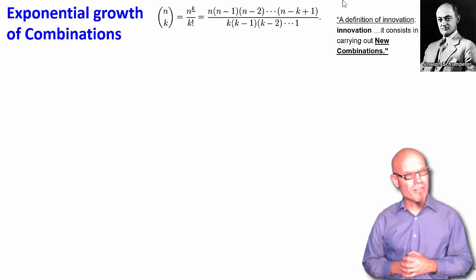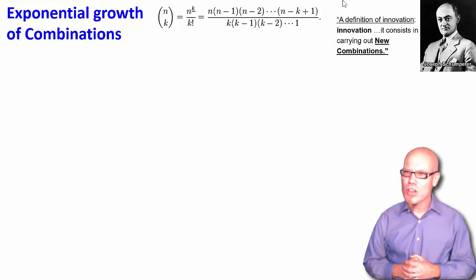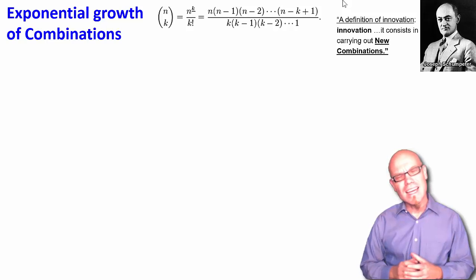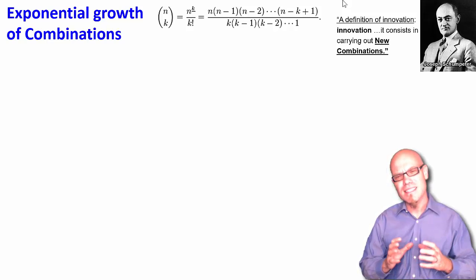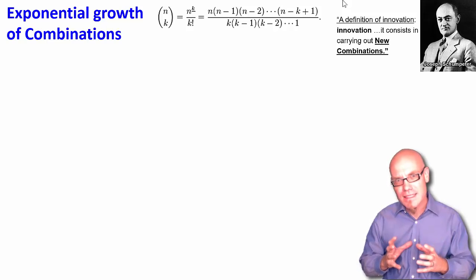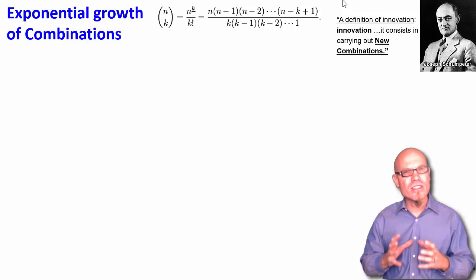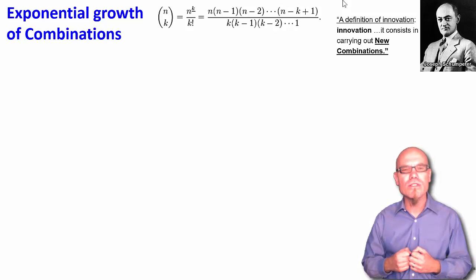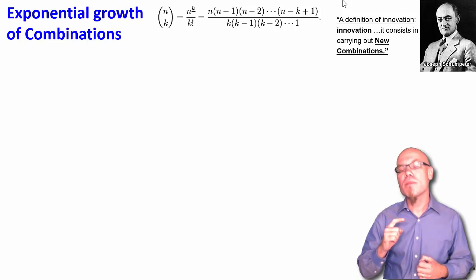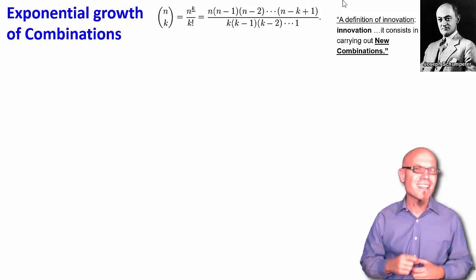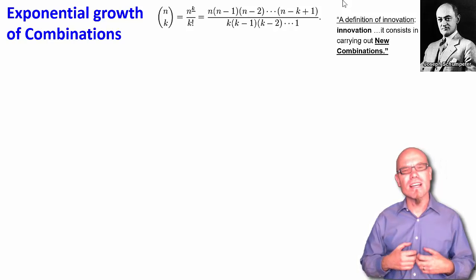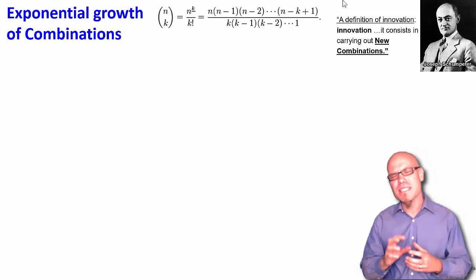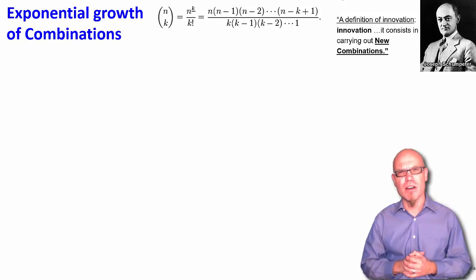So a definition of innovation is that it consists in carrying out new combinations. This definition goes back to Joseph Schumpeter. And it is very insightful because it tells us that an innovation is a new combination, a recombination of things. So there is nothing ever new. All we do is recombine it. And since combinatorics following this formula follows an exponential logic, technological change has this exponential nature to it. So let's look a little bit deeper actually on how this works.